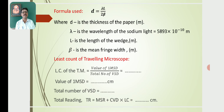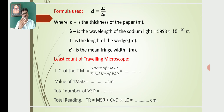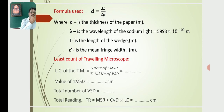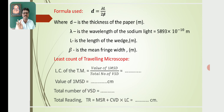The least count of the travelling microscope is equal to the value of one main scale division divided by the total number of vernier scale divisions. Note down the value of vernier scale divisions from the travelling microscope and substitute in this formula to calculate the least count. Usually, the least count of the travelling microscope is of the order of 0.001 cm. The total reading is determined using the equation: TR = MSR + CVD × LC, where MSR is the main scale reading, CVD is the coinciding vernier division, and LC is the least count.